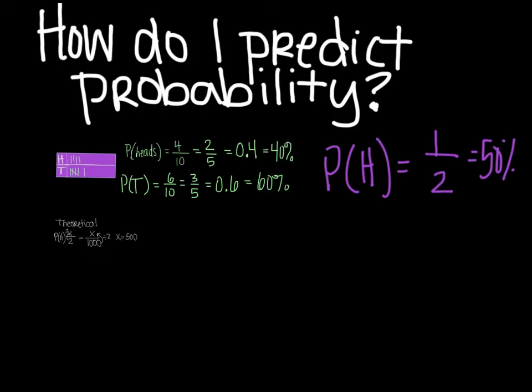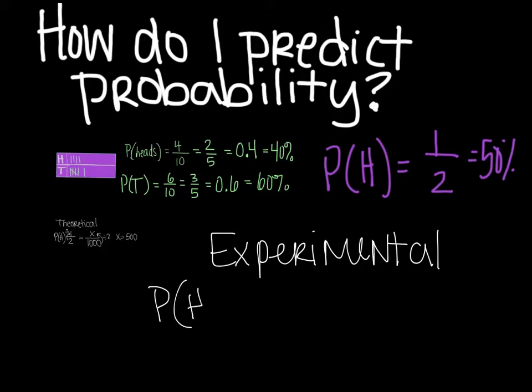I will next do experimental. And predicting with experimental is very much the same. I will do the probability of heads again, just to keep it simple. And that was four out of ten, which reduced to two out of five. So I'm going to use that number. It doesn't really matter. I could very easily use four tenths, too.